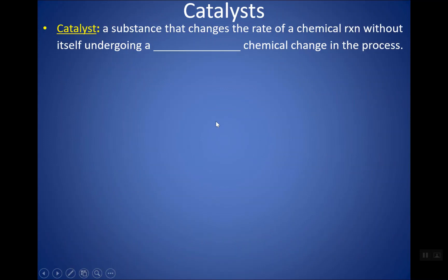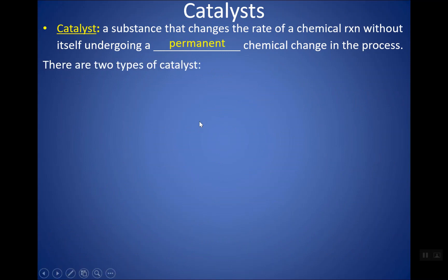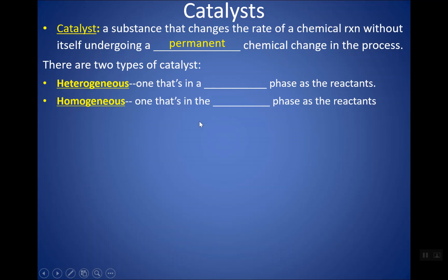A catalyst is a substance that changes the rate of a reaction without undergoing a permanent chemical change. There are two types: heterogeneous, meaning the catalyst is in a different phase than the reactants (for example, reactants are gases and the catalyst is a solid), and homogeneous, meaning the catalyst is in the same phase as the reactants — all aqueous, all gases, etc.